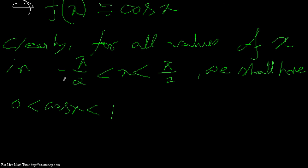Why is that? Because cos of minus pi by 2 equals to 0 and cos of pi by 2 equals to 0. So I get this cosx lying between 0 and 1.